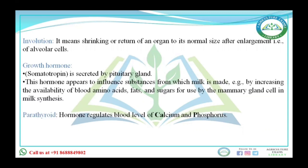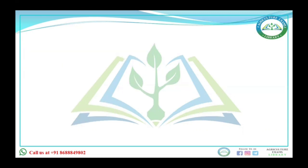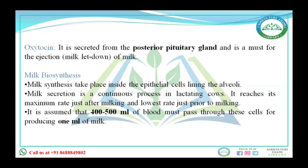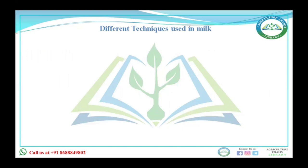Growth hormone somatotropin is secreted by the pituitary gland. Parathyroid hormone regulates the blood level of calcium and phosphorus. Oxytocin is secreted from the posterior pituitary gland and is responsible for milk let-down. Milk biosynthesis takes place in the epithelial cells lining the alveoli. Milk secretion is a continuous process — it reaches maximum just after milking and is lowest prior to milking. Four to five hundred milliliters of blood must pass through the mammary gland for the production of one milliliter of milk.